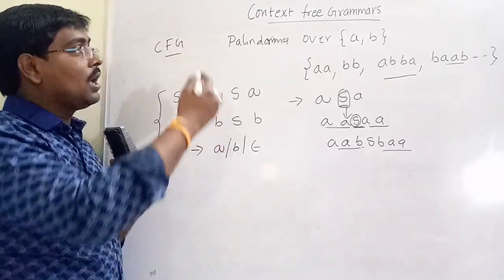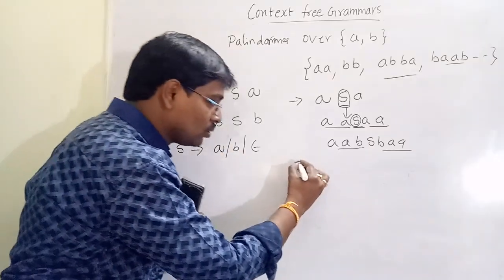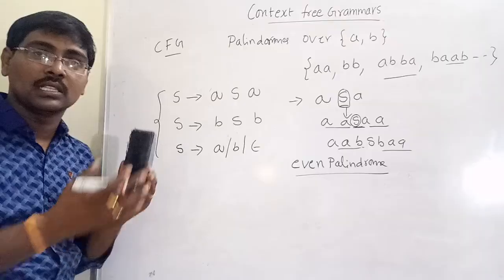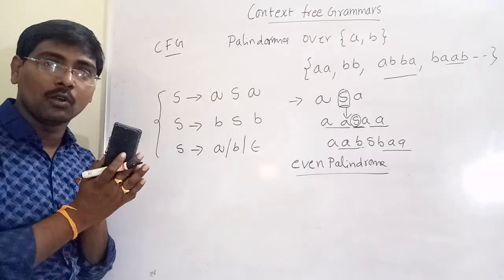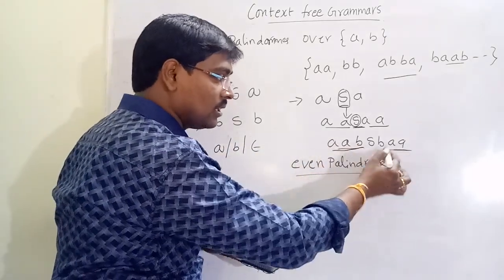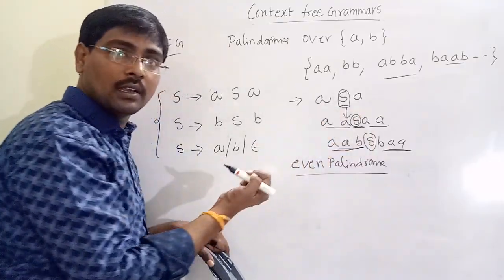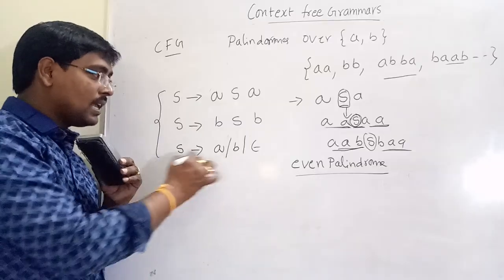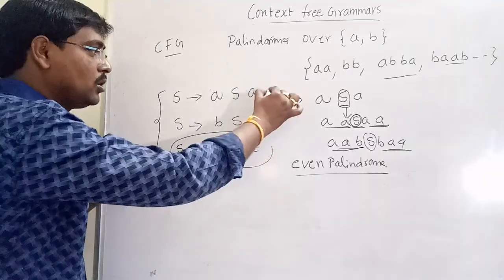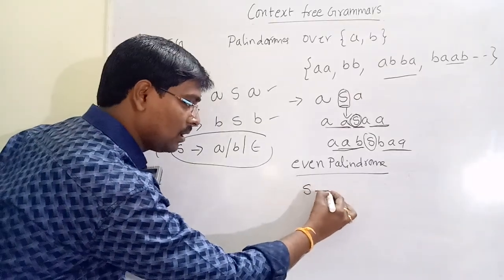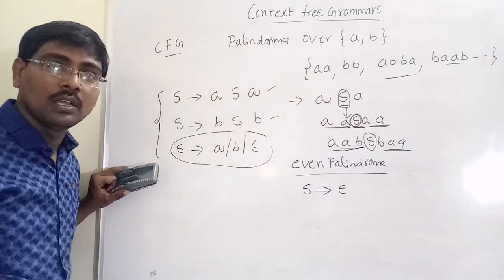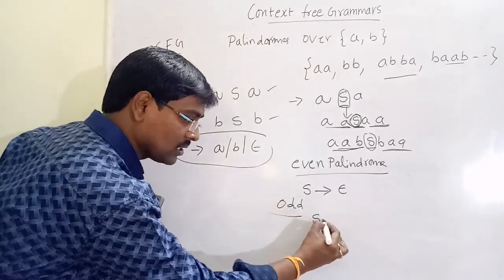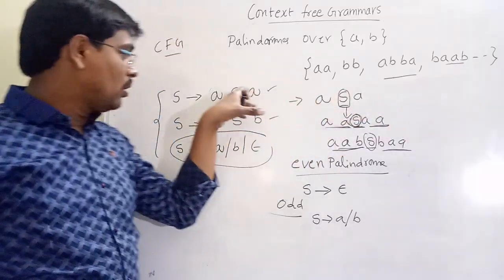To normalize the question — suppose you have to generate even palindromes only, where the length of the palindrome is even. In that case, in the last step, S is replaced with Epsilon only, meaning S tends to Epsilon only. For all palindromes, S is replaced with A or B as well. Depending on the question, we have to construct the grammar to check whether the strings are accepted or not.